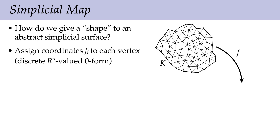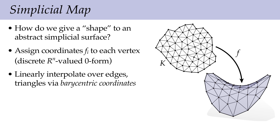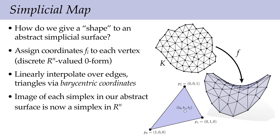To describe the shape of the surface, just as in the smooth setting, we encode the geometry by a map f that assigns locations to the vertices. Each vertex gets assigned some location in three-dimensional space, and that's enough to determine the geometry everywhere else: we connect vertices by straight line segments for edges, and fill in triangles by interpolation using barycentric coordinates, which get bigger as we approach one of the three vertices.